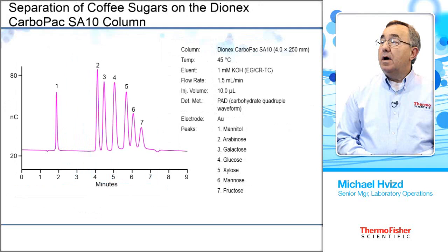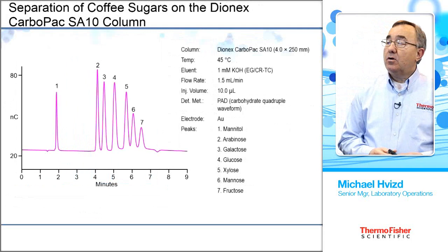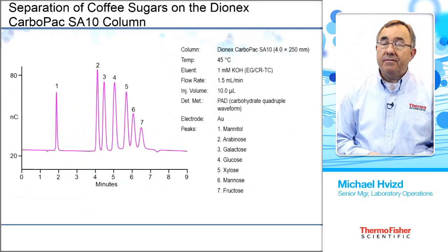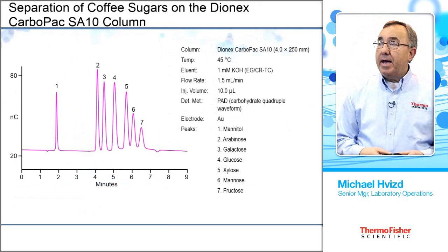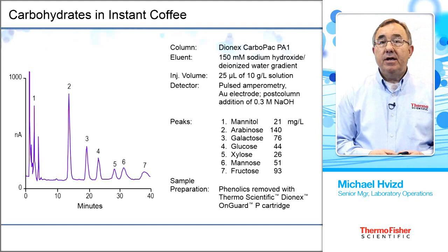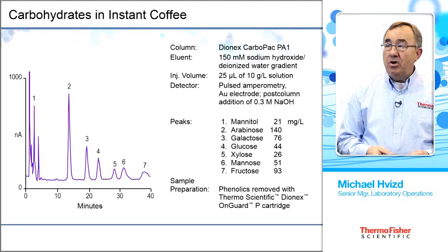The next separation shows a new method for coffee sugars. Coffee coming into the plant must be tested before it's sent out, so this analysis needs to be done with every batch from the production plant. Here we're showing about a seven-minute run on the Carbopac SA10 for sugars in coffee. The old method takes about 40 minutes for the same sugars, using a sodium hydroxide/water gradient — decreasing the hydroxide concentration over time to achieve separation. Compared to the newer separation, the old method is much, much longer.